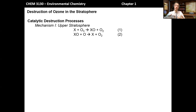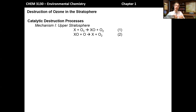This is why we refer to this as being catalytic — there are two reasons. First, the X group participates in the reaction but is not consumed by the reaction; that's one requirement for a catalyst. The second is that the X group speeds up this decomposition.